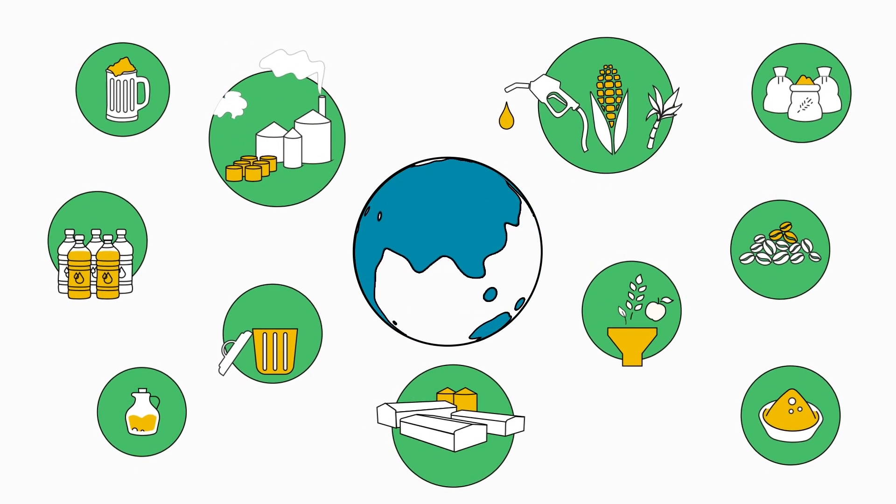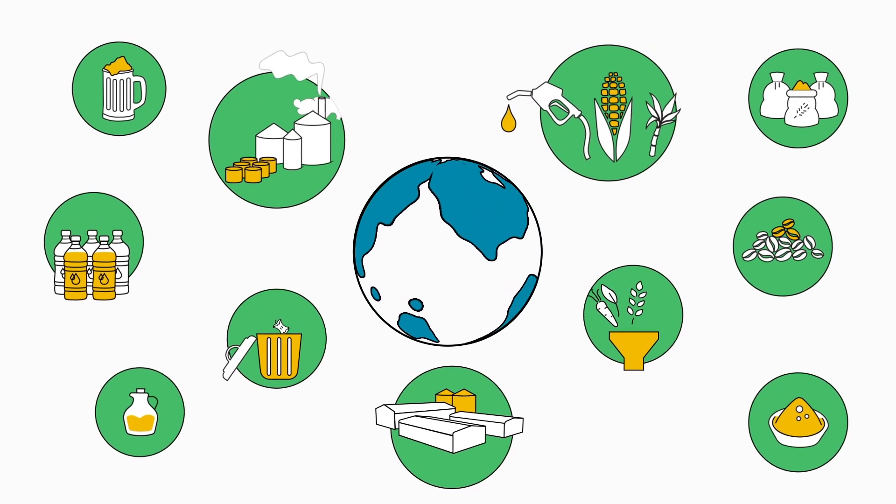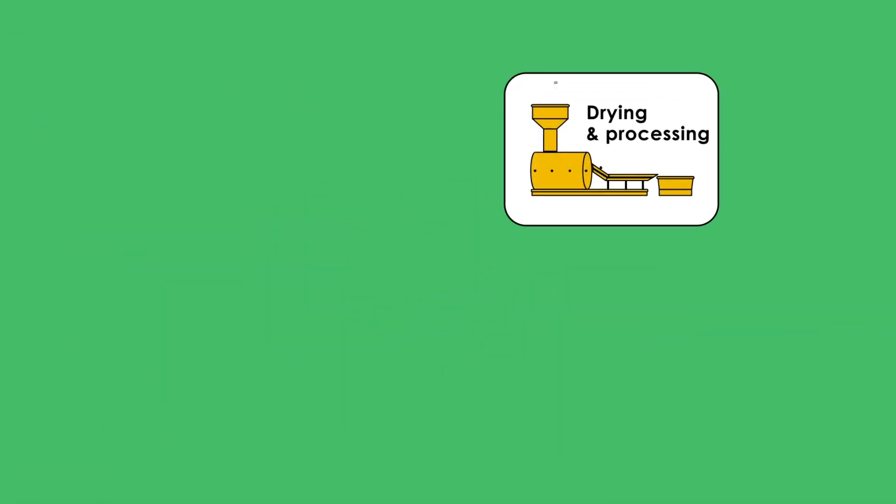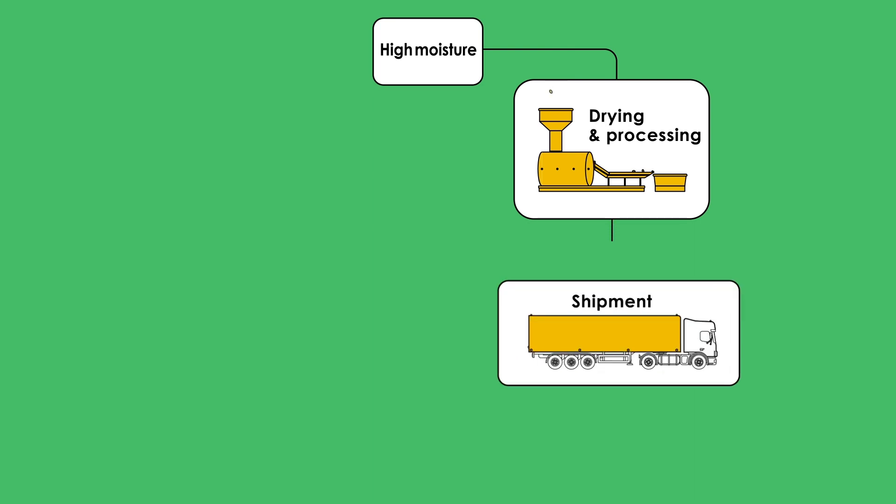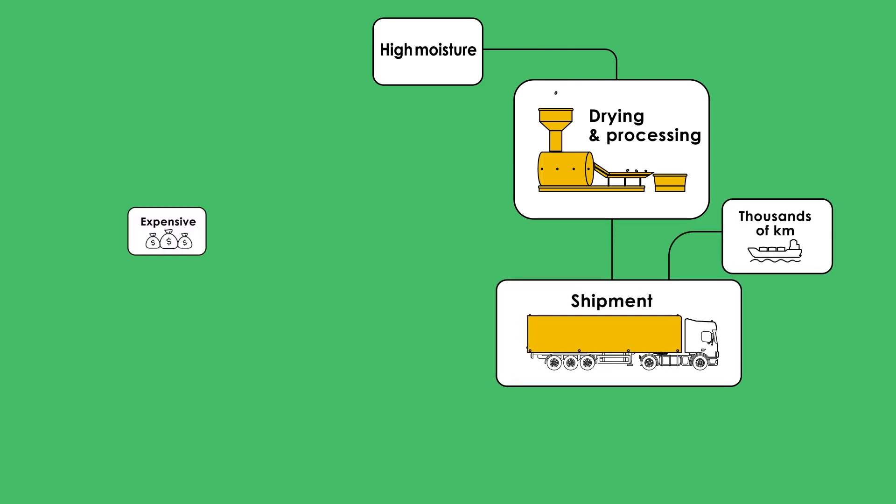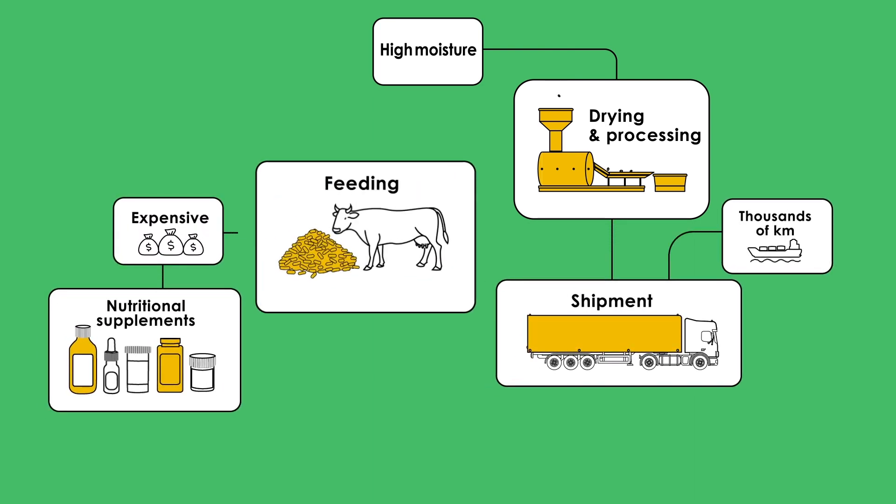Our world is filled with organic byproducts that drain our planet's resources. Current methods require drying, processing, and transporting, resulting in high energy consumption and low quality feed, making the process inefficient.